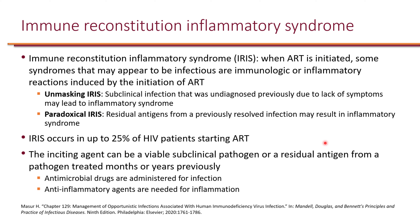For someone with CD4 cell count less than 200, the immune system is essentially non-existent. When an HIV patient starts ART, CD4 counts can begin to go up. This can result in a syndrome called IRIS — Immune Reconstitution Inflammatory Syndrome — where starting ART causes symptoms of inflammation to appear, because previously the immune system was too depleted to mount a response.